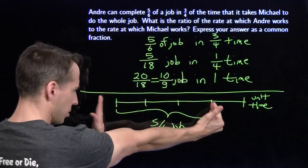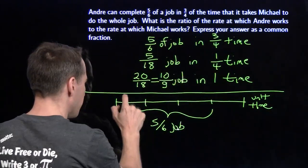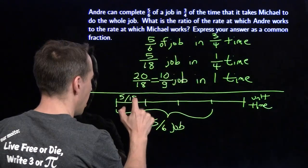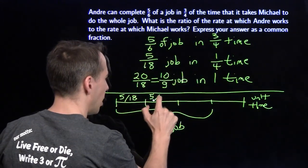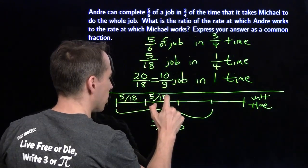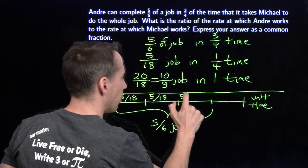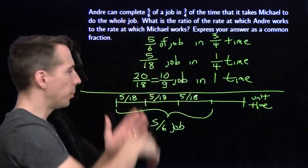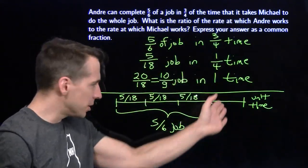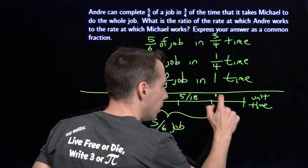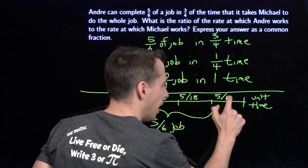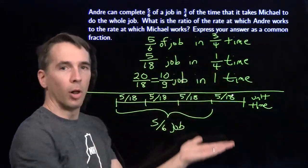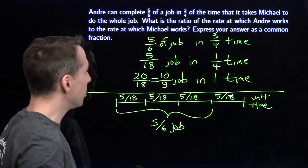So if he did 5 sixths of the job in these 3 equal pieces of time, we can just split that up. We can say this is 5 eighteenths of the job he does over here, 5 eighteenths of the job he does over here. And you can see that this picture is just another way to look at how we did the problem. Because if he did 5 eighteenths in each of these 3 equal pieces, there's one more equal piece out here. We know Andre is doing 5 eighteenths of the job out there. We just add them all up. We get 20 eighteenths of the job. That's how much Andre is doing.